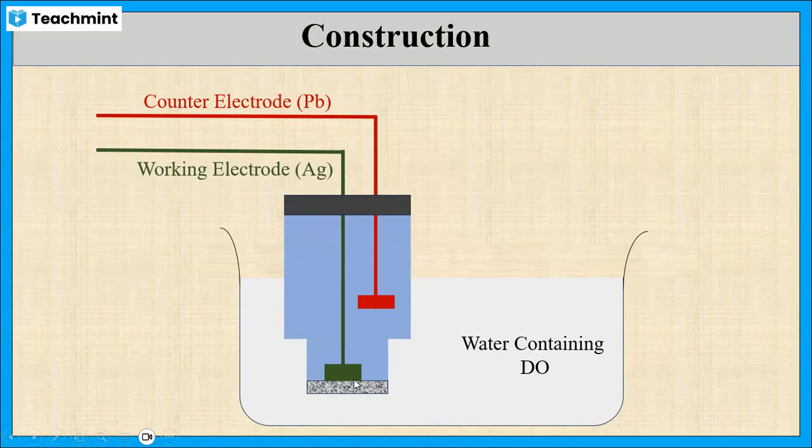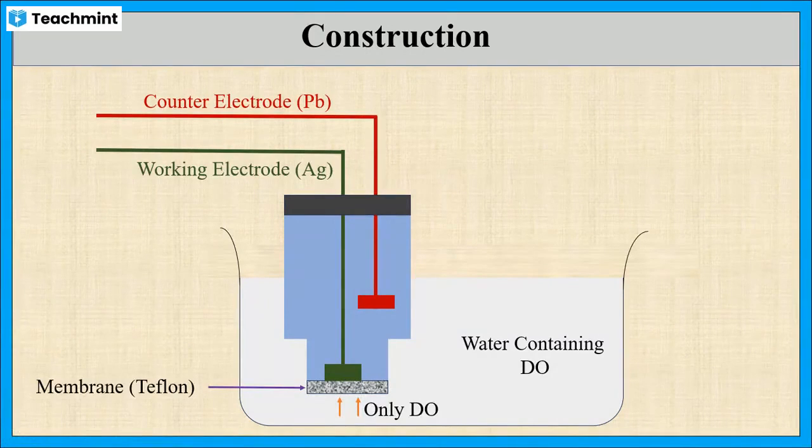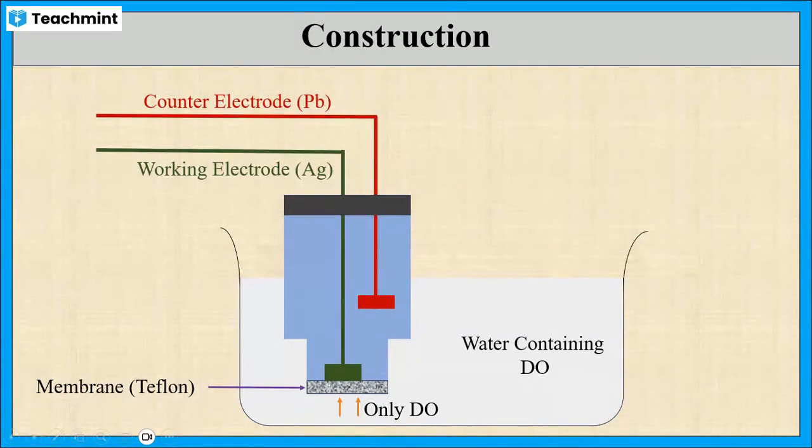At the tip of working electrode, an oxygen permeable membrane made up of teflon is placed, which allows the diffusion of only dissolved oxygen to the sensor. The electrolyte solution will be usually potassium hydroxide.